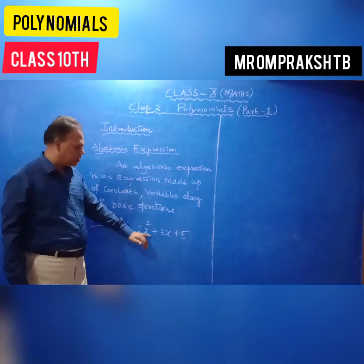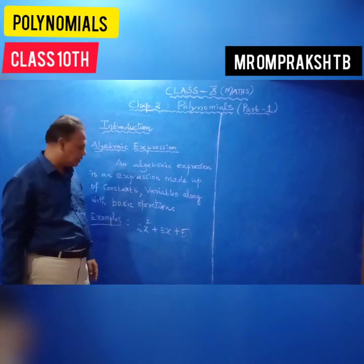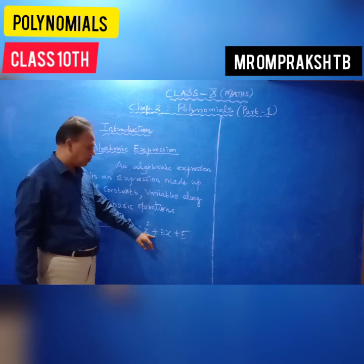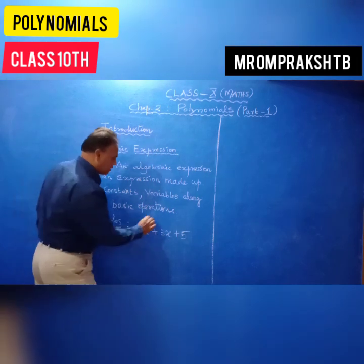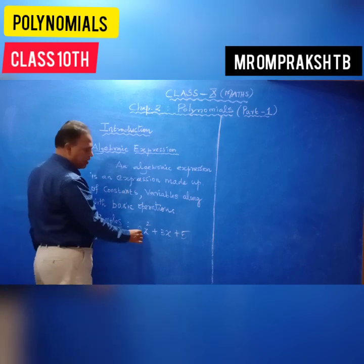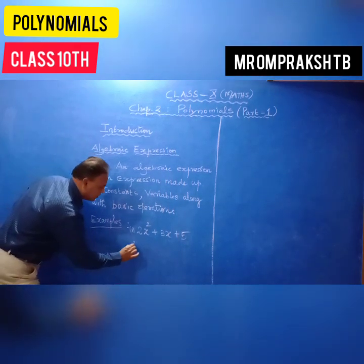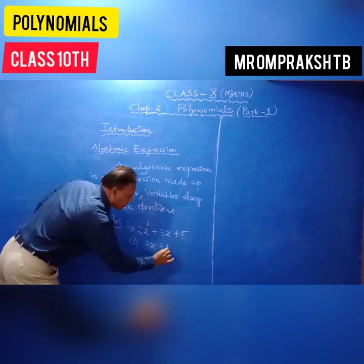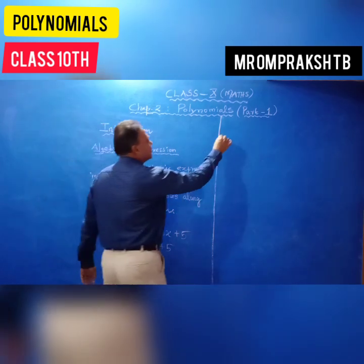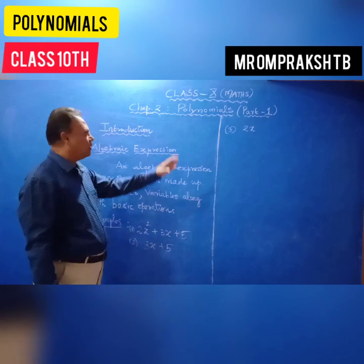See this example: 2x squared plus 3x plus 5. Here, 5 is a constant. The variable is X. The plus symbol is a mathematical operation. Together, these are called an expression. Any expression has a constant, variables, and an operation. For example, 3x plus 5 is also an expression, and even 2x is also an expression.